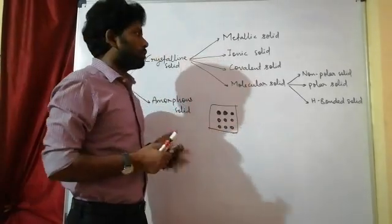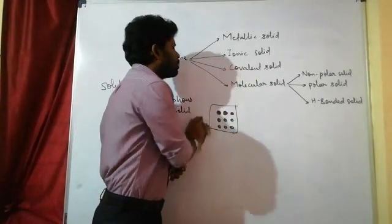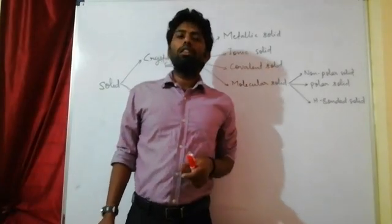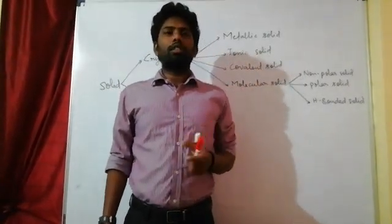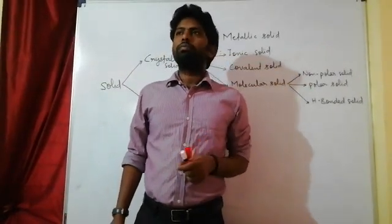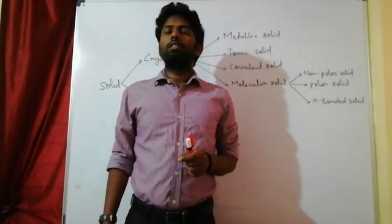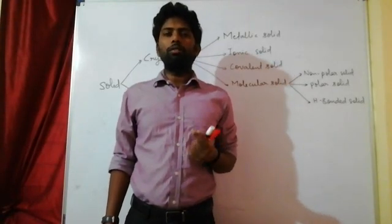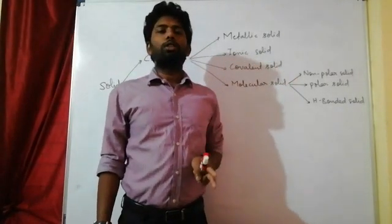These are the basic things we studied in previous classes. Now, write down the basic characteristics of a solid. Point number 1: solids have definite mass, volume, and shape.